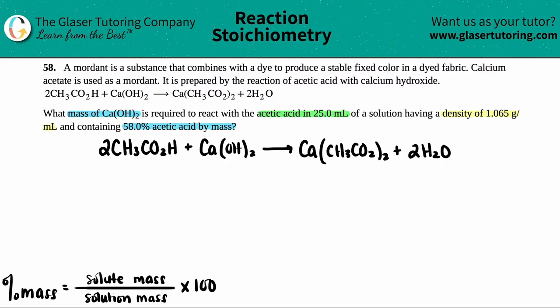Let's list everything we know underneath our balanced equation. I say it's balanced already because they gave me coefficients in the front — if they give you coefficients you can assume it's balanced, but you can always pause and check. The question is asking for the mass of calcium hydroxide in grams, so that's what I'm searching for.